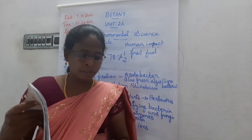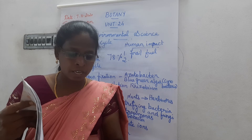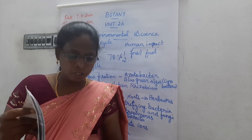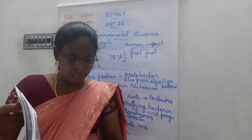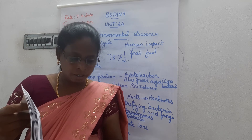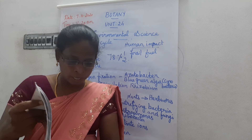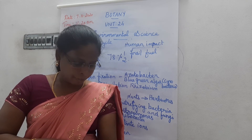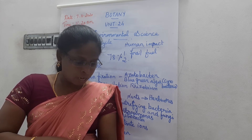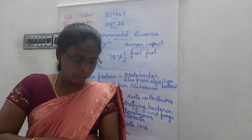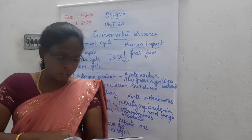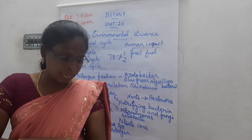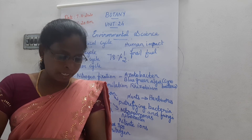Choose the correct answer, first two questions. The third question from last class: the atmospheric carbon dioxide enters into plants through the process of photosynthesis. Match the following — microorganism and their role: nitrosomonas corresponds to nitrification; acetobacter corresponds to nitrogen fixation; pseudomonas species corresponds to denitrification; putrefying bacteria corresponds to ammonification.